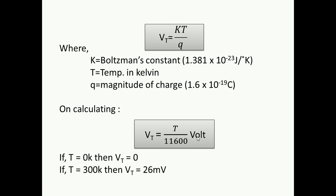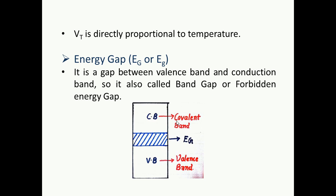We will see how thermal voltage varies when you put different temperature values. At 0 Kelvin, thermal voltage equals 0 — obviously when temperature is 0, thermal voltage is 0. At 300 Kelvin, you get a thermal voltage of 26 millivolt. So for a large variation in temperature, that is 300 Kelvin, we get a minute variation in thermal voltage of just 26 millivolt. The standard room temperature corresponds to a voltage of 26 millivolt. Thermal voltage is directly proportional to temperature.